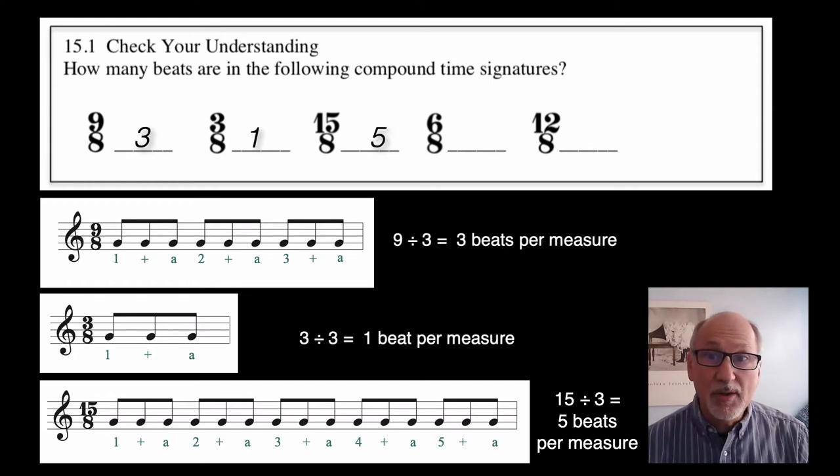However, many compound meters have other numbers as the lowest number of the time signature, such as 16, 4, 2. It's always best to check how the rhythm of the music is grouped to confirm whether or not the meter is compound.